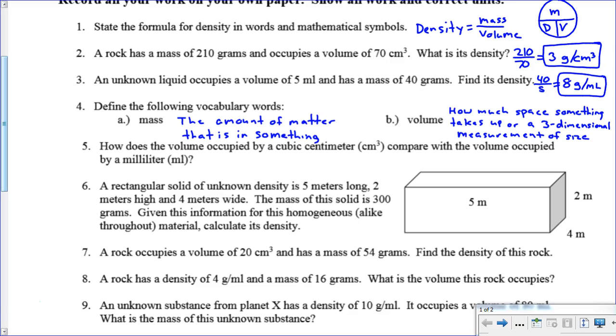Going on to question number five, it says how does the volume occupied by a cubic centimeter compare with the volume occupied by a milliliter? If you're not familiar with this, those are actually exactly the same thing. They're two different units we use, but a centimeter cubed and a milliliter are exactly the same. They're interchangeable. That's important because if we say something has a density in grams per centimeter cubed, it's going to have the same density in grams per milliliter.